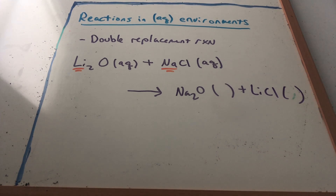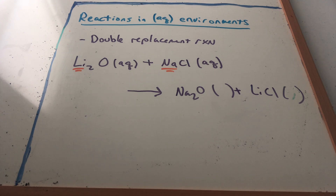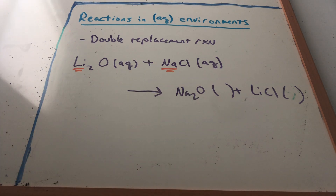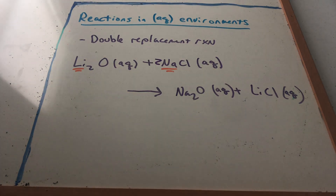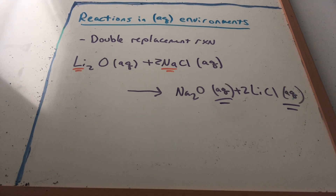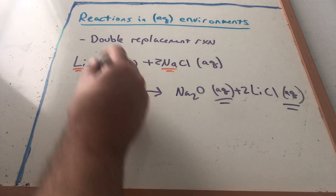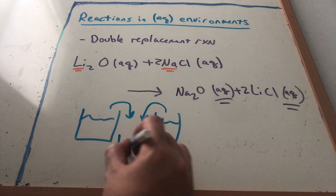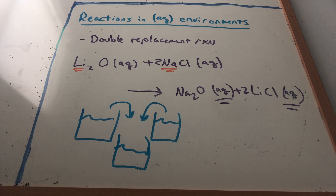Looking at the solubility rules: Na2O has a Group 1A metal — aqueous. LiCl also has a Group 1A metal — aqueous. Balancing gives a 2 in front of LiCl and a 2 in front of NaCl. So what happened? I had a beaker of Li2O and a beaker of NaCl, poured them together, and did I get a precipitate? No — everything stayed aqueous. Everything was a spectator ion.